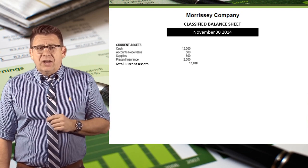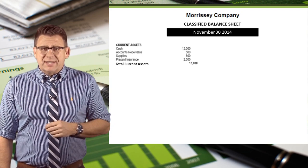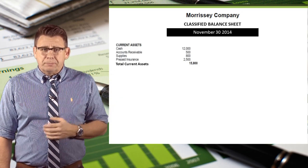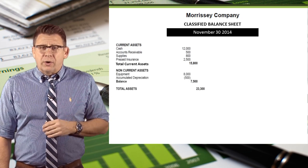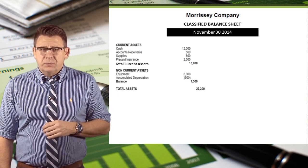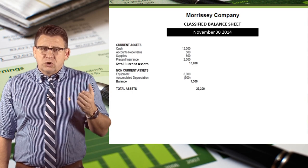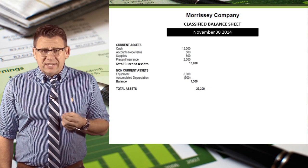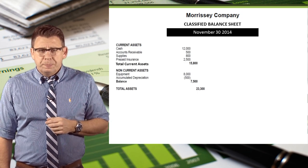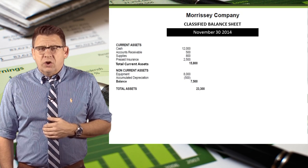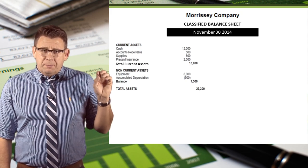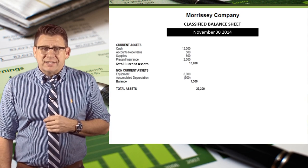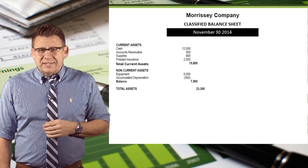On the asset side, we start with the current assets section. Here we list our current assets in the order of liquidity and then total them. Next we prepare our long-term assets section. These items are often grouped as investments, plant assets, intangible assets, and other non-current assets. In this introductory video, we'll just list them as plant assets since all we have for this company are plant assets. Finally, we total our assets.